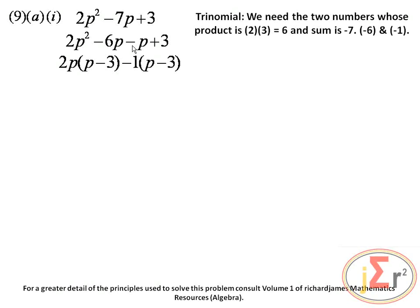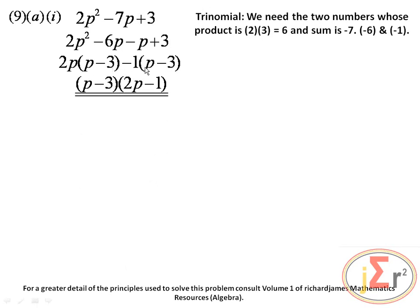As a rule, the sign that begins the second pair is used as the sign of the common factor. The second pair is negative p plus 3, so the sign is negative 1. There is no common factor of p and 3 other than 1, so our common factor is negative 1. Negative 1 into negative p gives positive p. We find a common factor of (p minus 3) in both pairs.